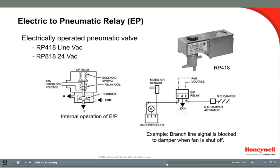The EP relay might be wired to a fan starter so that when the fan is on, the valve delivers air pressure to a damper. In this example, the damper will open when the fan is running and close when the fan shuts off. EPs can also be used as diverting valves, such as when dual PRVs are used, as seen in the Pneumatics 4 video on two-temperature thermostats.